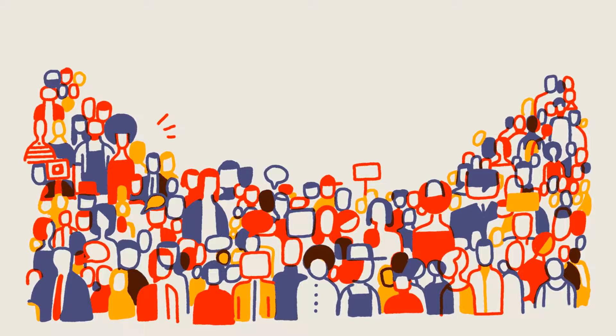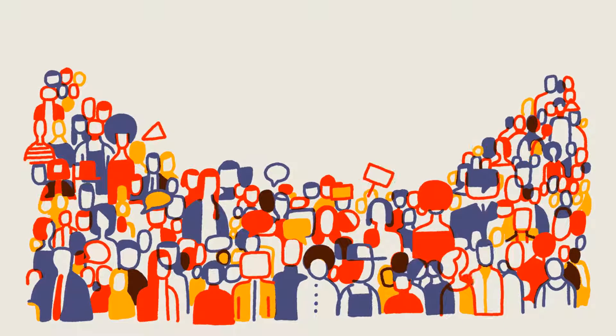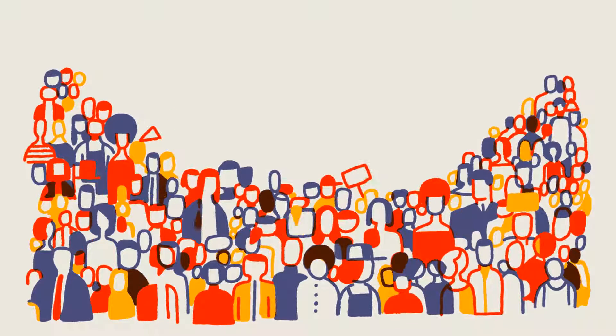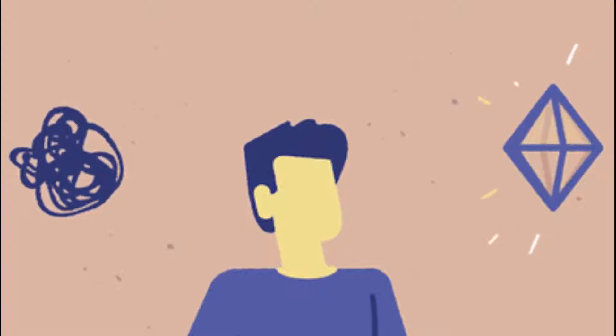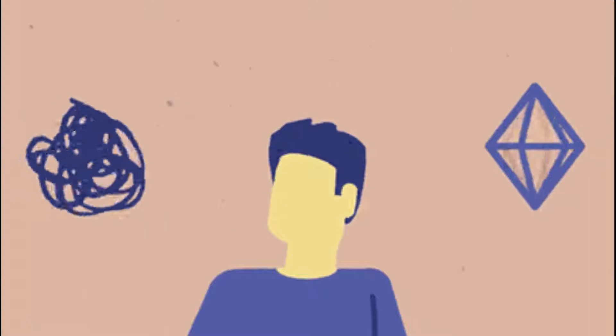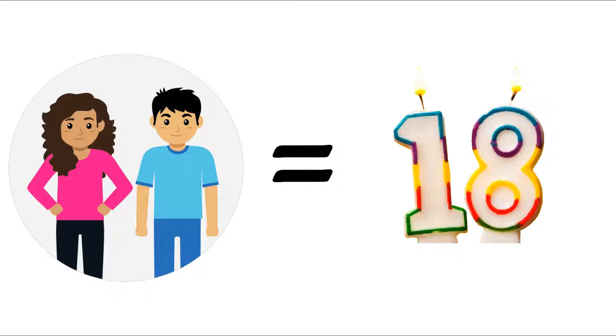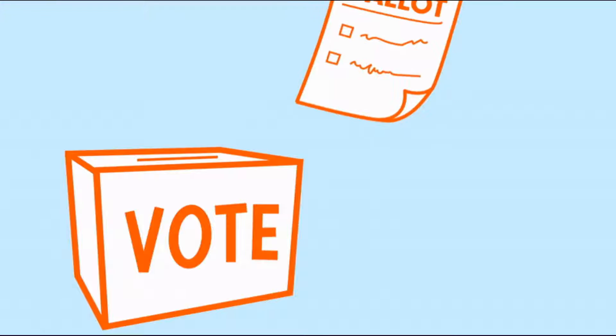We have choices because we live in a democracy. Due to a variety of variables, our options are limited. Moreover, when we reach the age of 18, we all gain the right to vote.